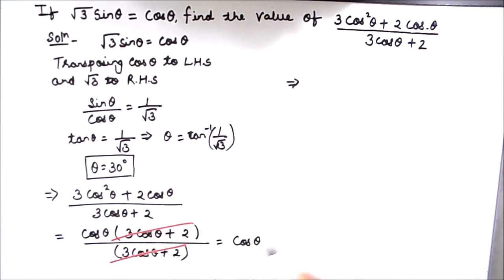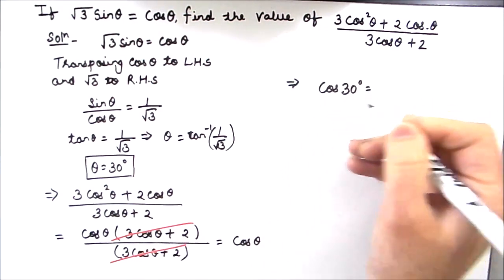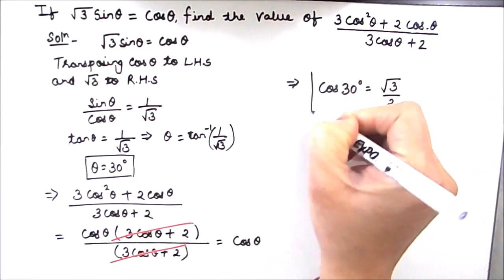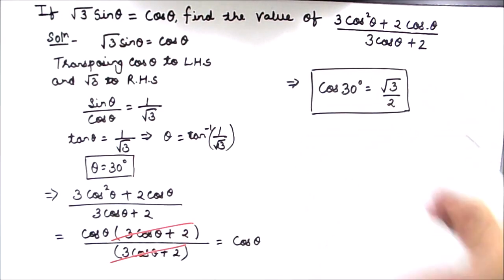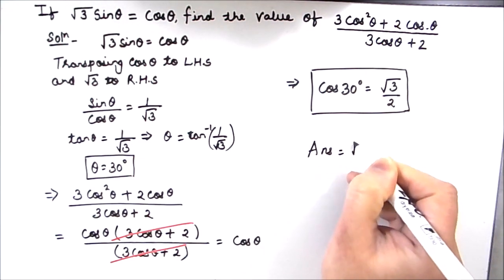Now we know the value of theta. We will put the value of theta as cos 30 and cos 30 is root 3 by 2. So the value of this expression is root 3 by 2. Our final answer is root 3 by 2.